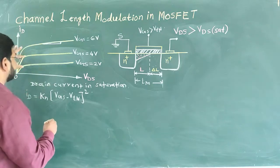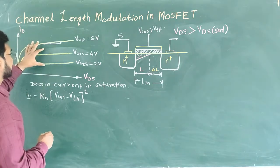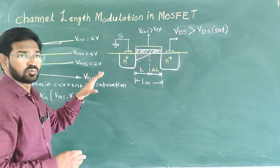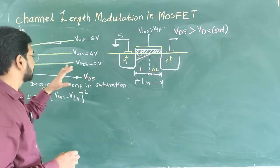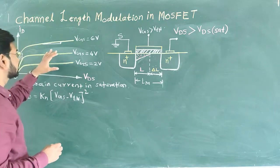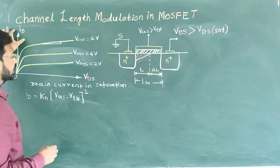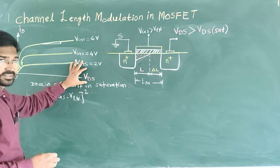But in this characteristic we have a positive slope. Why? It shows the dependence of drain current on VDS.